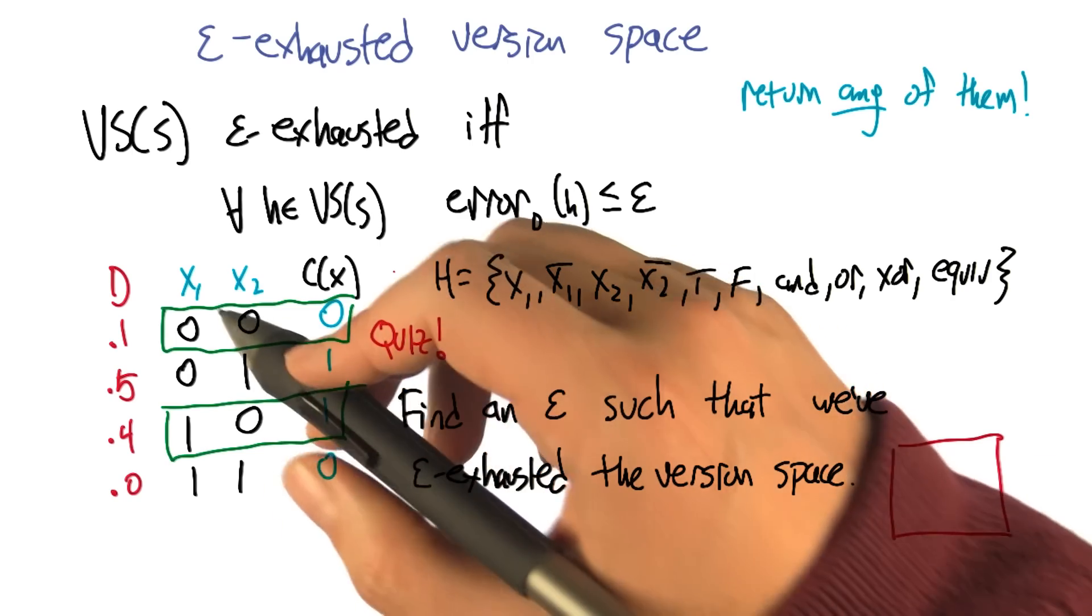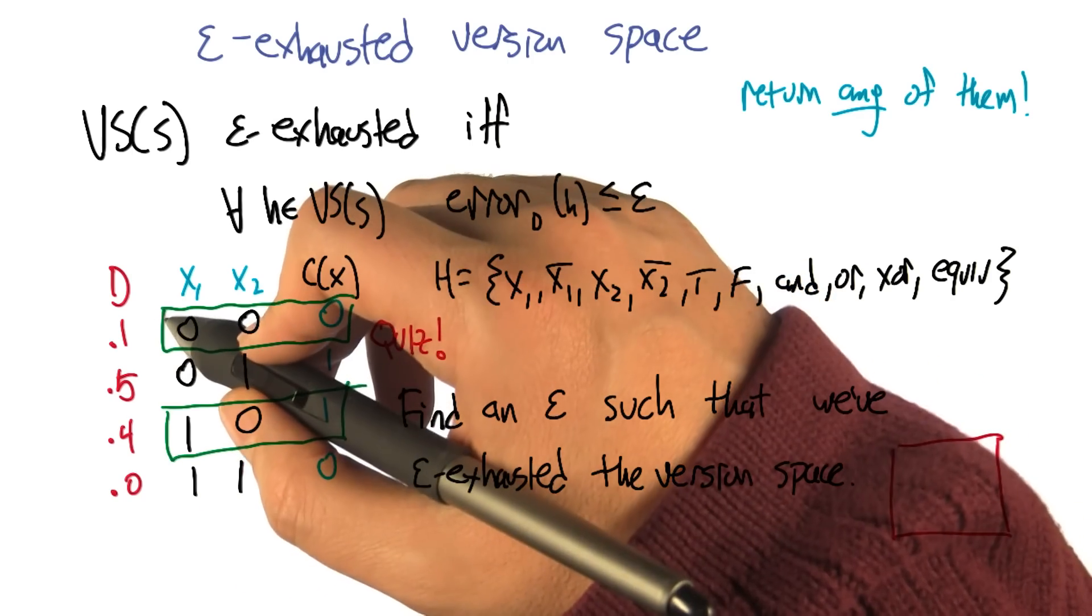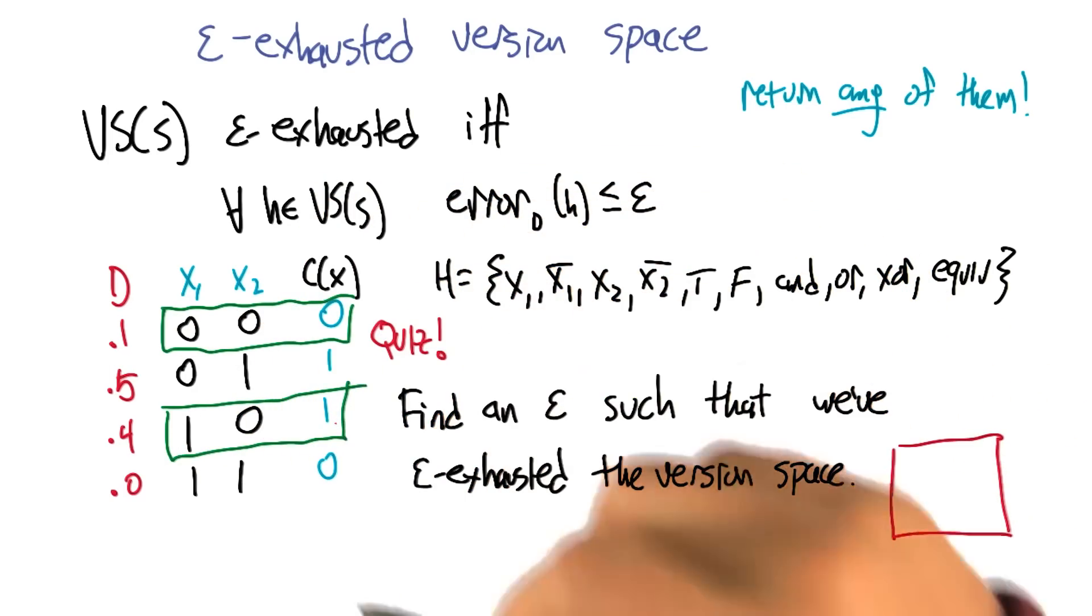So, here's our example from before. We've got our target concept, which is XOR. We've got our training data, which is the things in the green boxes here: zero, zero, output zero; one, zero, output one.